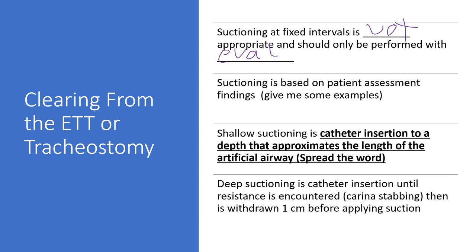Suctioning is based on patient assessment findings. Examples include: coarse breath sounds in the central airways around the trachea or main stem bronchi, visible secretions in the ET tube, or in a neonate, a bradying-down heart rate which could indicate airway occlusion. These are the primary indicators we look for to know when to suction a patient.